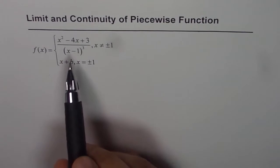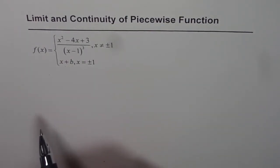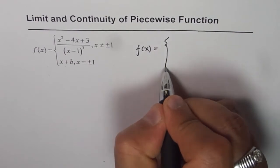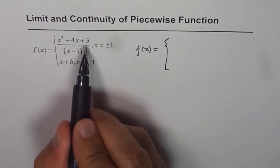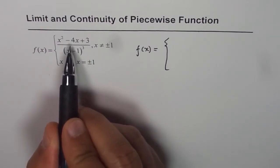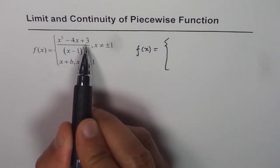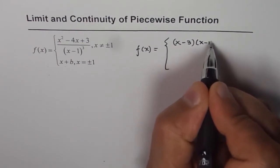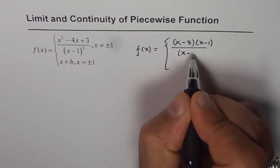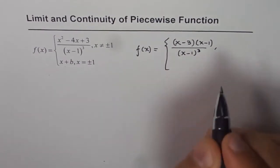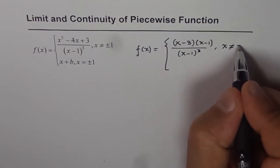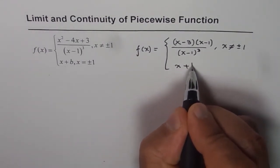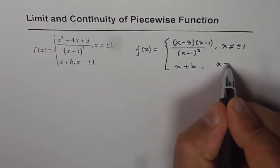The first step is to factor the rational part of the function and write it in a simplified manner. So f(x) equals x squared minus 4x plus 3. We need two numbers whose product is 3 and sum is minus 4 — those are minus 3 and minus 1. So we can factor the numerator as (x minus 3)(x minus 1). The denominator is (x minus 1) cubed, and the function is valid for all values of x except plus or minus 1. At x equals plus or minus 1, the function is defined as x plus B, a linear function.